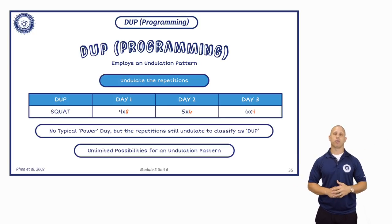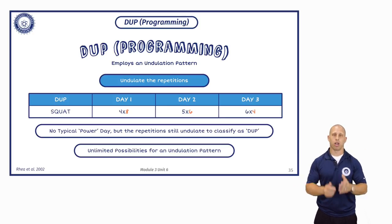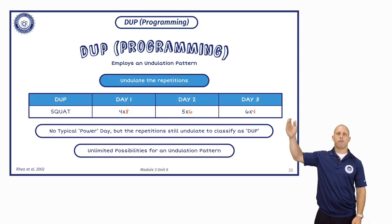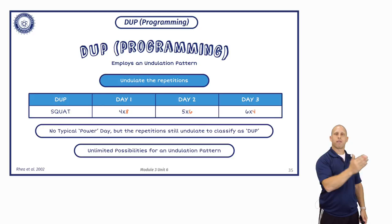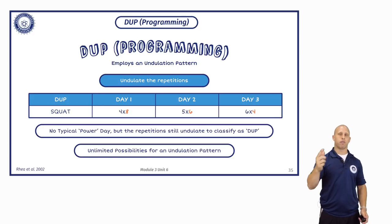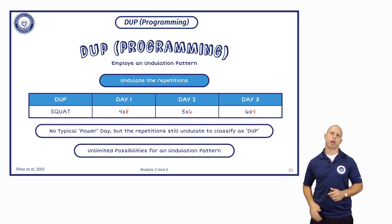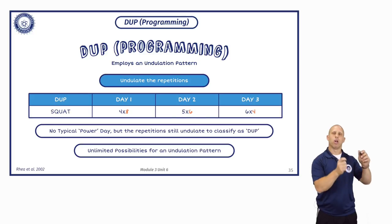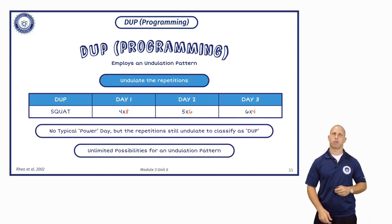There are unlimited possibilities for an undulation pattern. What determines whether your three-day-per-week undulation pattern is 15, 12, 10 or 5, 3, 1 — well, 15, 12, 10 is high reps, meaning volume, so that's early in a macrocycle. And then later in a macrocycle, your undulation pattern would be lower reps.